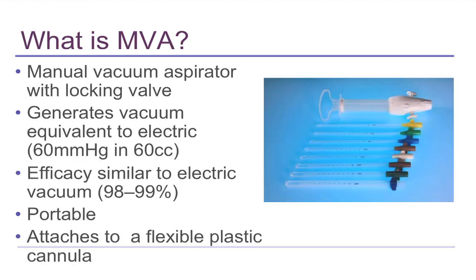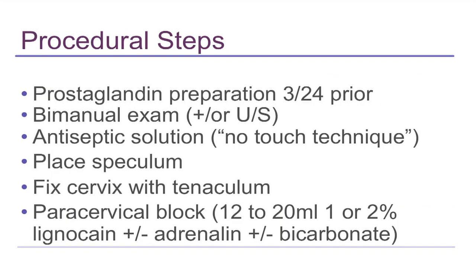Manual vacuum aspiration syringes have an airlock, allowing a vacuum to be created inside the barrel. There are a number of different models — this one is not exactly the same as the ones we will be using later. Prostaglandin preparation three hours beforehand makes for easy dilation and reduces the risk of surgical injury.